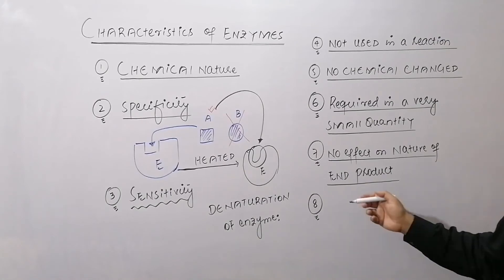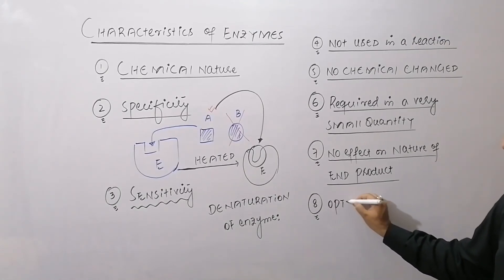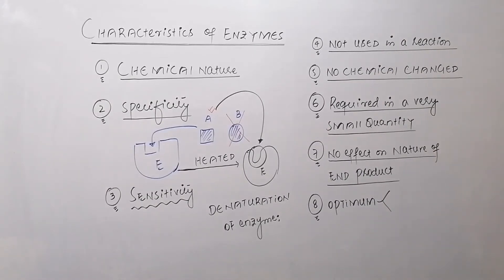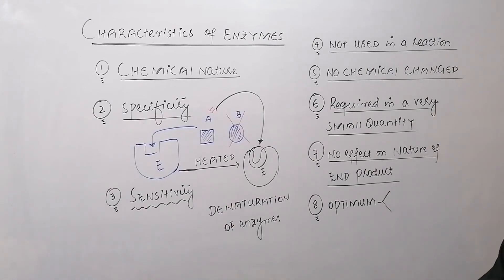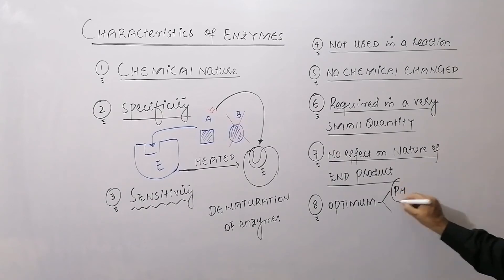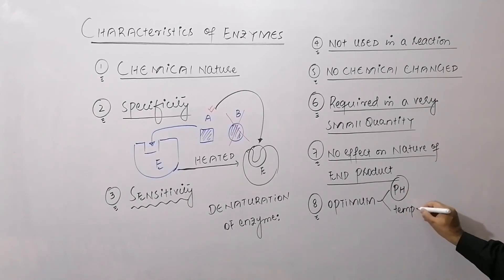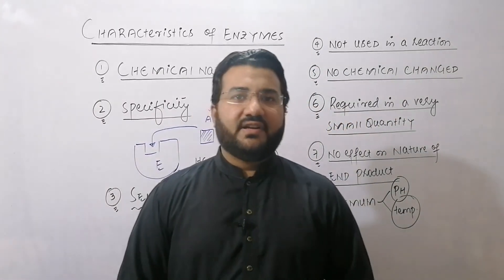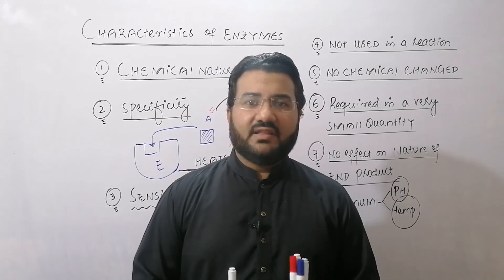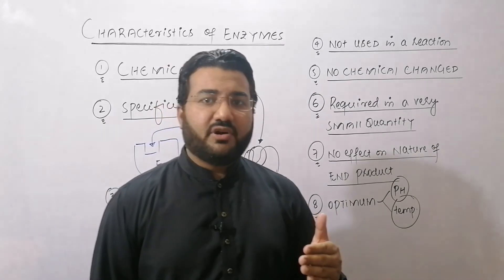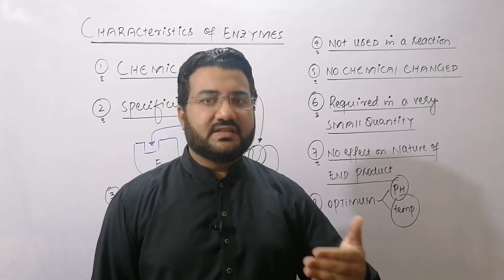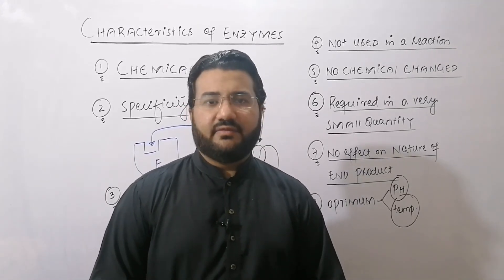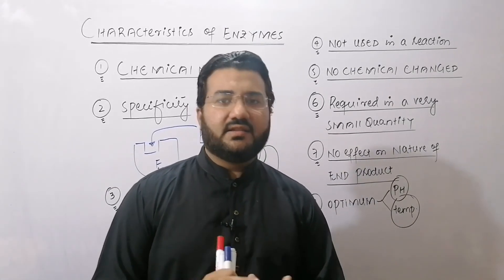Eighth, enzymes work within a specific range of temperature and pH. The temperature and pH at which an enzyme shows maximum efficiency are called its optimum temperature and optimum pH, respectively. For example, enzymes in the human body work best at 37 degrees Celsius, which is the normal human body temperature. During fever, when the body temperature increases, enzyme denaturation begins, and this results in overall weakness felt during high fever.